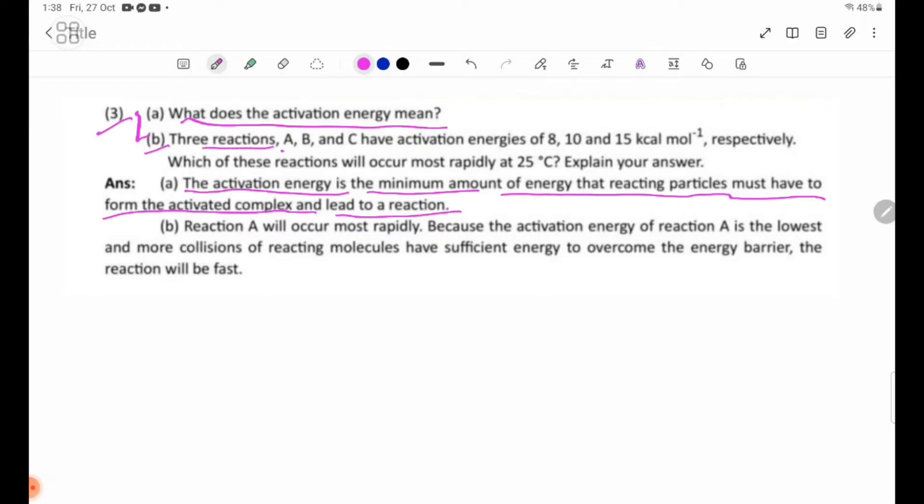Three reactions, A, B, and C, have activation energies of 8, 10, and 15 kilocalories per mole, respectively. Which of these reactions will occur most rapidly at 25 degrees Celsius? Explain your answer.